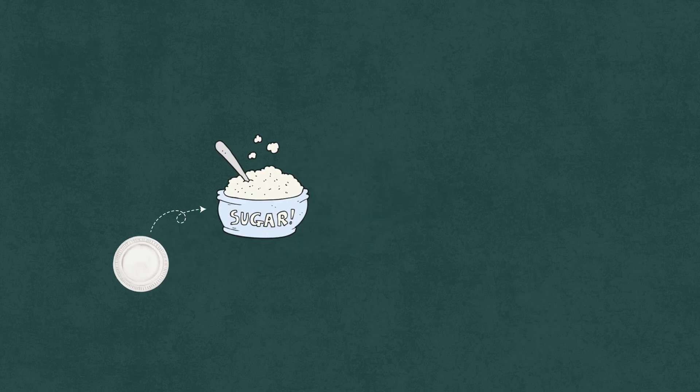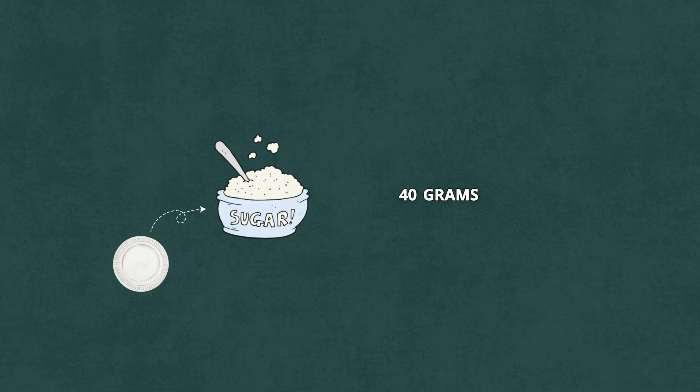You know what's crazy? The average healthy breakfast has more sugar than a dessert. That bowl of cereal and orange juice combo can contain over 40 grams of sugar. That's basically drinking a can of Coke before 9am.